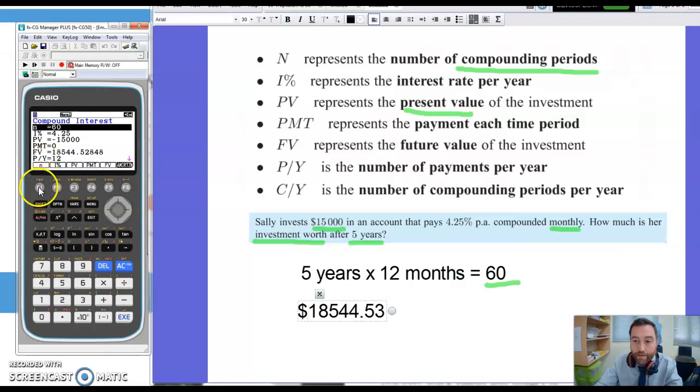You basically just put in as much information as you can and then click on whichever thing you need to calculate. So if I want to calculate N I press F1. If I'm calculating interest press F2. If I'm calculating a present value or an initial investment type in the PV F3. If I want to know how much the payment should be F4. And there we go, FV was F5.